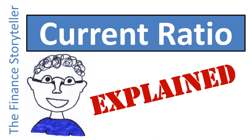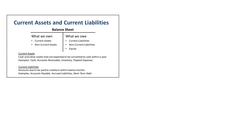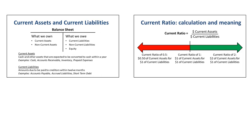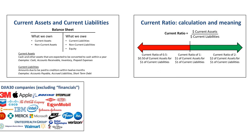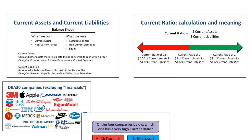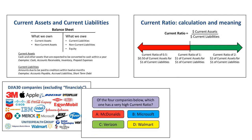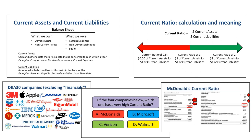How to calculate the current ratio? And more importantly, once you have calculated the current ratio, how to interpret it? What does a current ratio of 0.5, 1, or 2 mean? What is the story behind the numbers? How are some of the largest companies in the world performing on their current ratio? Find out all you need to know about the current ratio in this video.